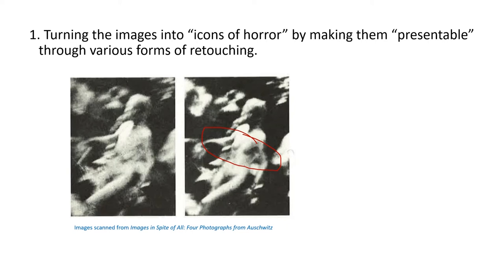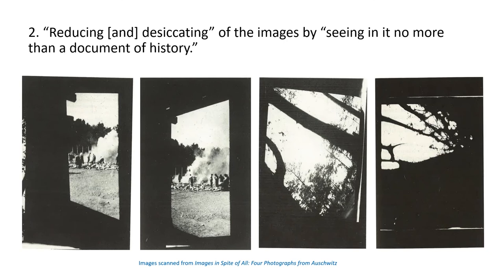The second way Huberman discusses is reducing and desiccating the images by seeing them as no more than a document of history. These were the four photos smuggled out, and you can only imagine how difficult it was for these prisoners to take photos in secret and, on top of that, to smuggle them outside the camp. The quality and the angles of these photos reflect the difficulty of that whole process. In the first two, you'll see giant piles of bodies of people who had just been killed in the gas chambers being burned. The two on the right didn't work out as well in terms of capturing what was going on. The Sonderkommando had to step away into the background, hide in the buildings and the shadows of the trees, and snap a quick photo. There was no chance to make sure the angle was right, the lighting was right. Then they had to smuggle the film out in toothpaste tubes and such — it just shows you the urgency and the difficulty of this task.